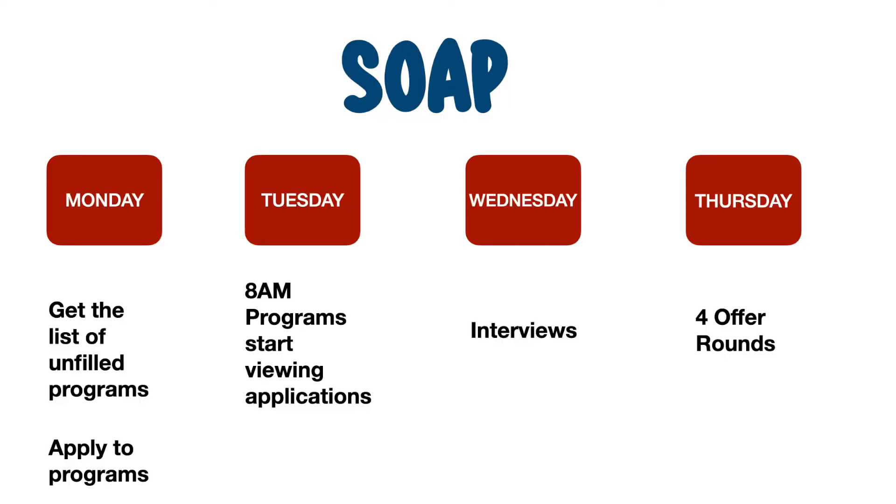Quick interviews happen on Tuesday and Wednesday. Let's say a program has two vacancies and interviewed six people — programs will arrange candidates in order of preference. On Thursday there are four rounds of SOAP, each lasting about two hours. In round one, the top candidates receive an offer on their NRMP page and have two hours to accept. If they accept, they've matched via SOAP; if they don't accept within two hours, the offer expires and goes to the next candidate on the list.